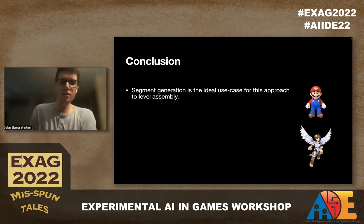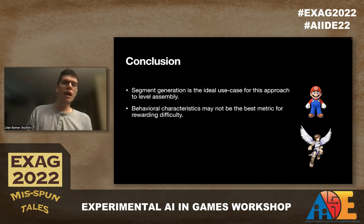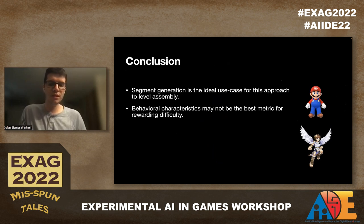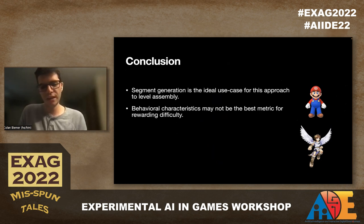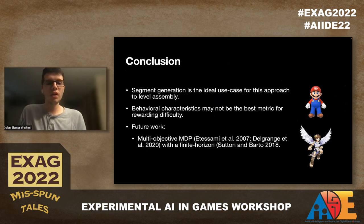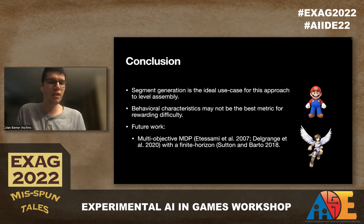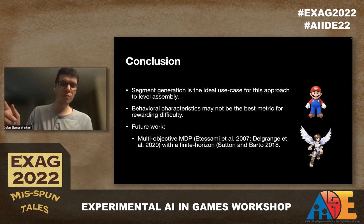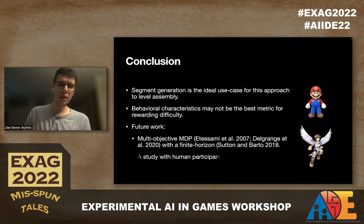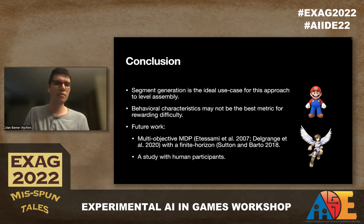In conclusion, segment generation is the ideal use case for this approach to level assembly, not level slices. Behavioral characteristics are probably not the best metric for rewarding difficulty, but there is existing work this could benefit from. For future work, we want to change to a multi-objective MDP with a finite horizon — finite because we're generating one level per policy, not many. We also want to run a study with human participants to see if this method could be a valid approach to dynamic difficulty adjustment.